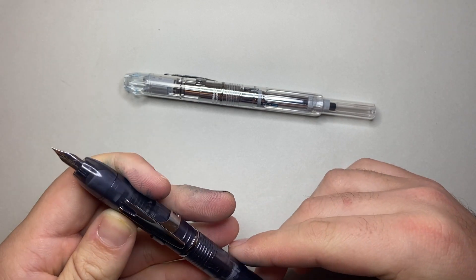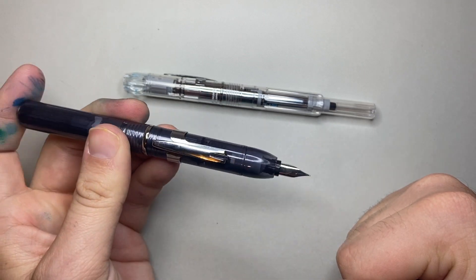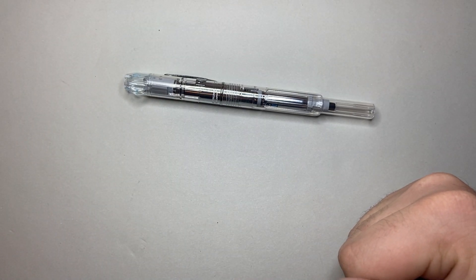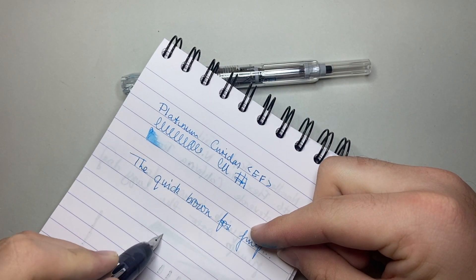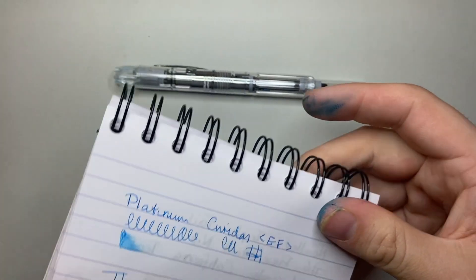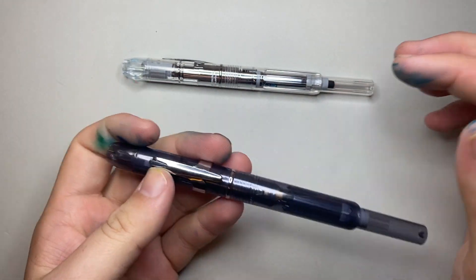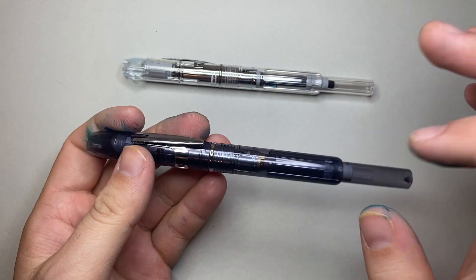It retracts. I'm not even going to bother really inking this one up. The nib on the page, obviously it's not inked, but it actually feels a lot smoother. This is a fine as opposed to the extra fine. So I'm sure it does everything it's supposed to do, but the materials feel cheaper, and the mechanism is clumsier.